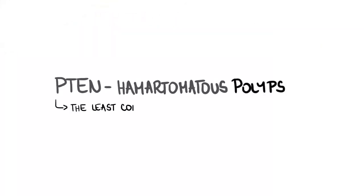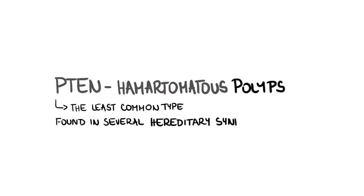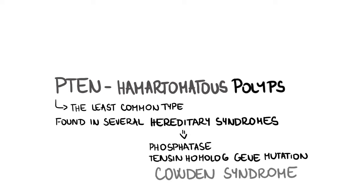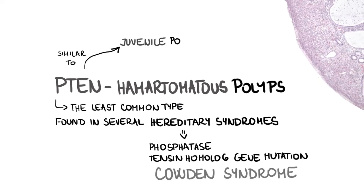PTEN hamartomatous polyps are the least common type. They can be found in several hereditary syndromes characterized by a PTEN (phosphatase and tensin homolog) gene mutation, such as Cowden syndrome. Histologically, they are very similar to juvenile polyps.